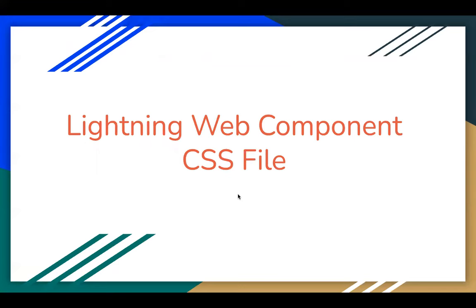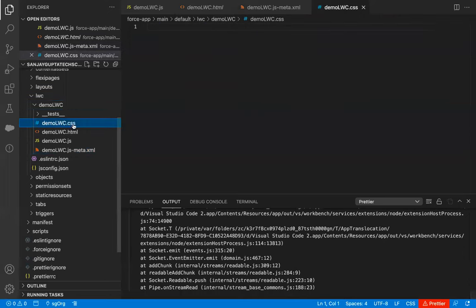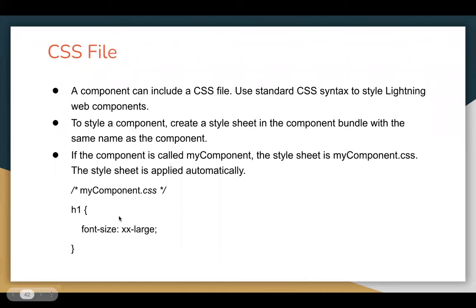Let's understand the CSS file of a lightning web component. A component can include a CSS file. Use standard CSS syntax to style lightning web components. To style a component, create a stylesheet in the component bundle with the same name as the component — if the component is called myComponent, the stylesheet is myComponent.css. The stylesheet is applied automatically if it is available. Here you can see demo LWC.css is present. If it is not available, right-click on your component and use new file to create it. You can write CSS rules like applying a style to the H1 tag.